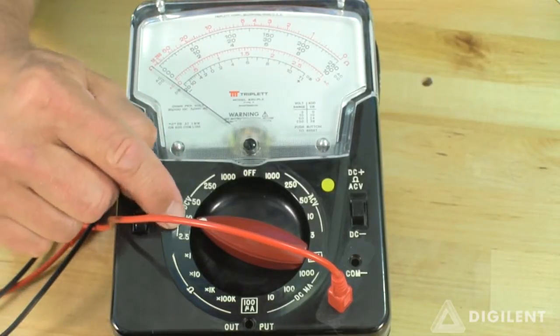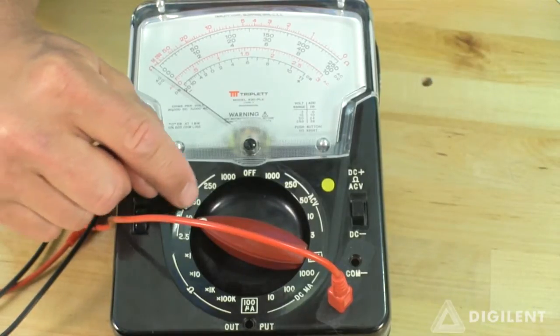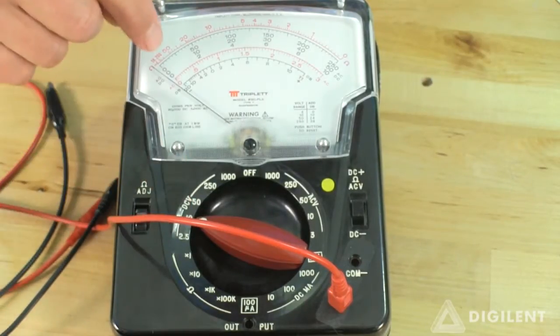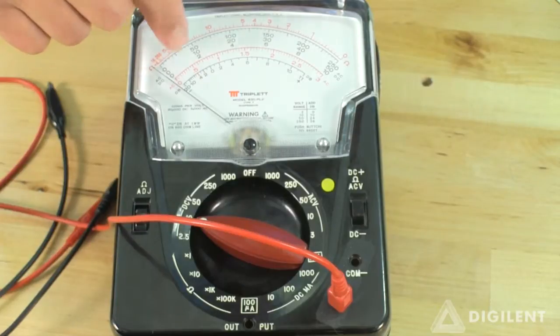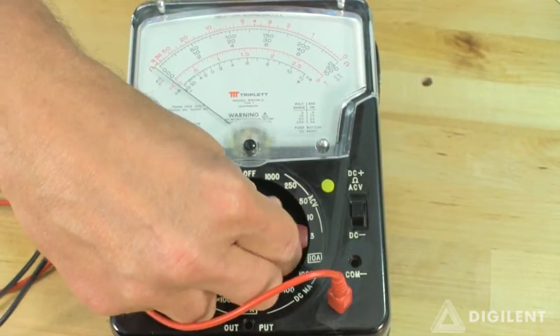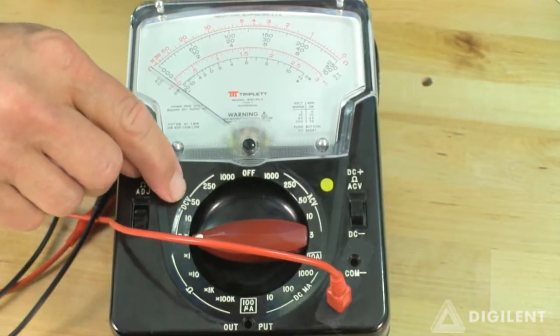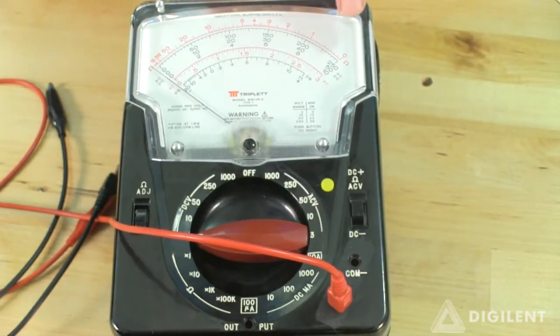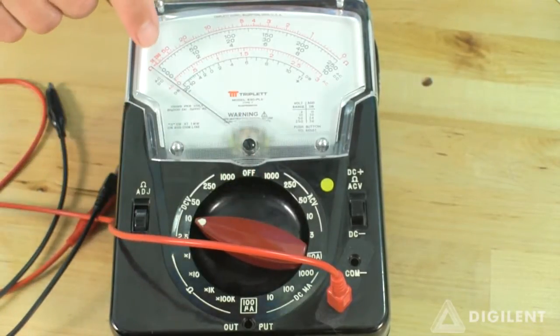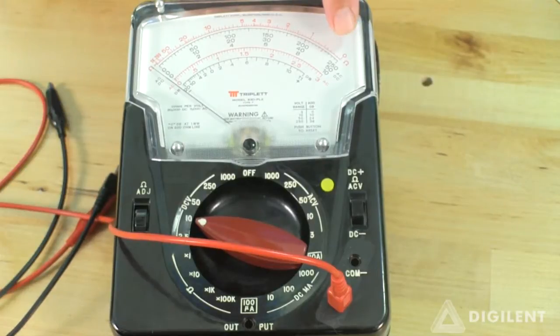Notice that each measurement has several settings on this meter. These settings set the scale on this meter. So if I choose 2.5 on the voltage scale, I get 0 to 2.5 volts. 10 volts corresponds to a scale of 0 to 10 volts.